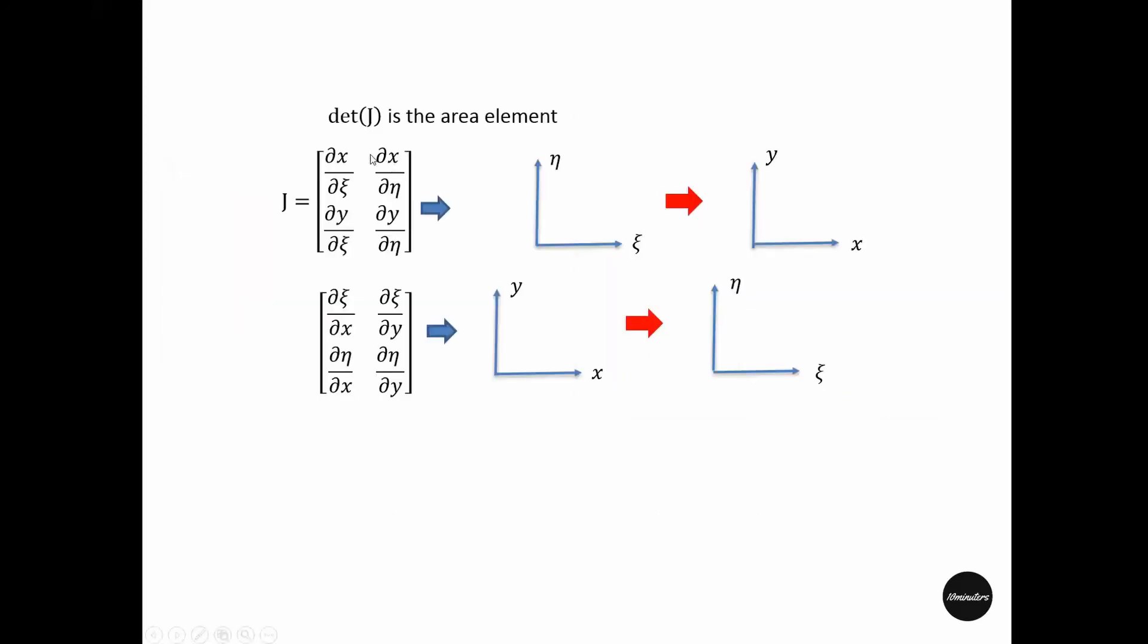So this determinant four actually is an indication that the area of this element has been increased by four times. This Jacobian can help us transform from eta-zeta to x-y coordinate. If we want to go back from x-y to eta-zeta coordinate, we have to take the opposite derivative. In this case it was del x by del zeta, but here we have to do del zeta by del x, and so forth.